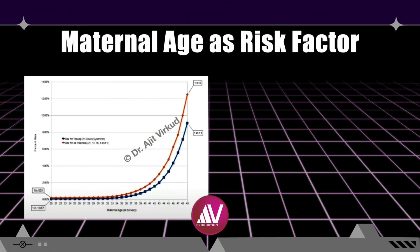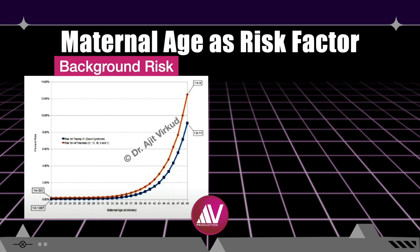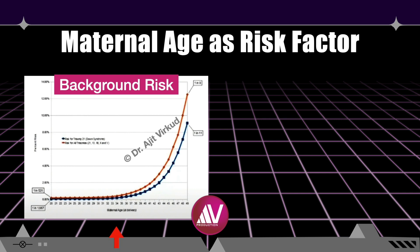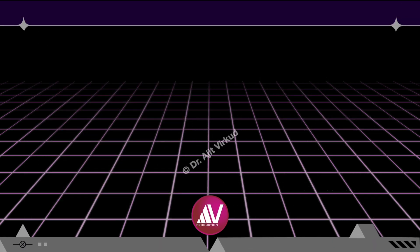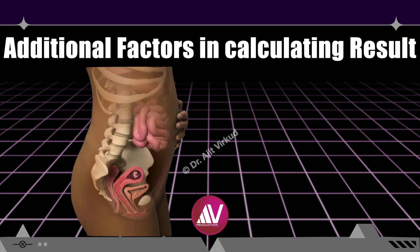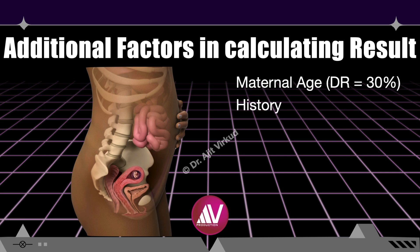Maternal age is an important risk factor for Down syndrome, referred to as the background risk. As shown in this graph, the risk for Down syndrome increases with maternal age, with a sharp increase after the age of 35 years. The cutoff age for screening pregnant women was changed from 40 years in the past to 35 years at present. Note that most babies with Down syndrome are born to mothers less than 35 years old, because more women have babies at younger ages. Besides maternal age, additional factors used in calculating test results include history, ethnicity, smoking, diabetes, maternal weight, and gestational age.